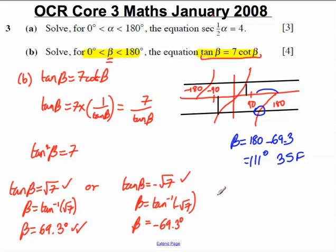So therefore, for our examiner, the final solutions of beta is either equal to 69.3 degrees or 111 degrees to 3 significant figures. Thank you very much.